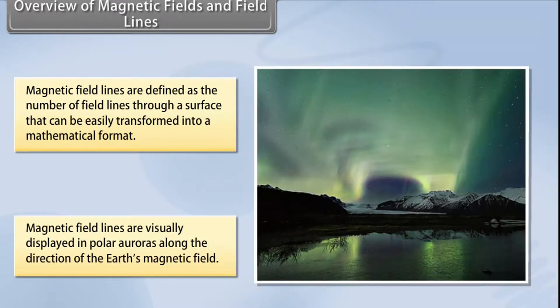Magnetic field lines are visually displayed in polar auroras, where visible streaks of lines are created along the direction of Earth's magnetic field.